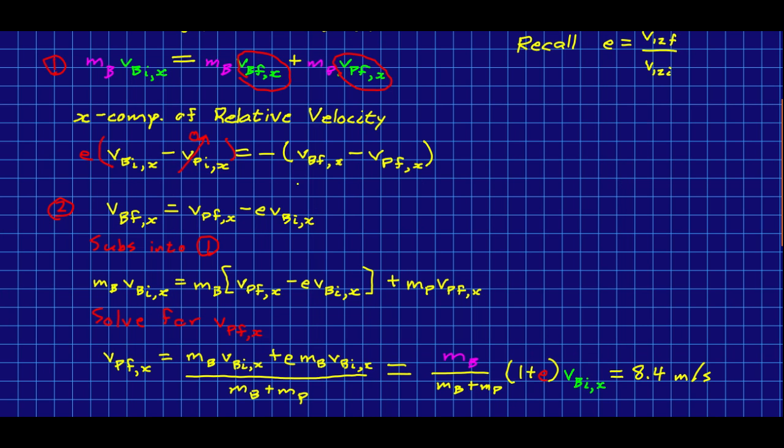So there's my algebra in all its glory. I solved for vbfx. I substituted it back into the conservation of momentum. Here it is substituted in. I solved for vpfx. I did a bit of simplification and I plugged in our original numbers and came up with 8.4 meters per second as a final answer and I'll just do a unit check. We have kilograms over kilograms which cancel. One plus e, e is a dimensionless number so that all is fine and so we have our meters per second from our v here.